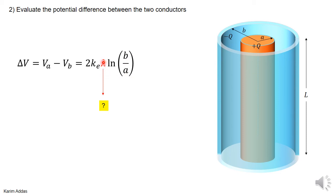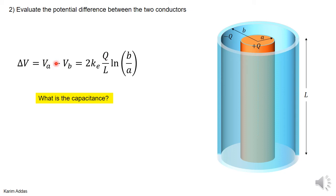We can also replace λ with what it represents: the total charge over the total length. If the total charge on the inner conductor is plus Q and the total length is L, then λ equals Q over L. Substituting λ by Q/L gives us the final result for the potential difference.